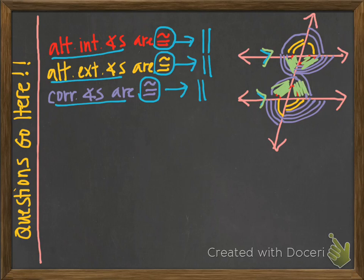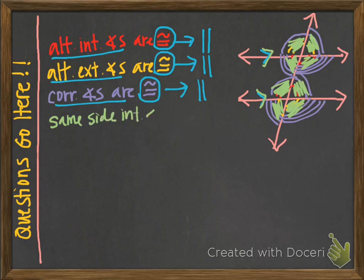The same is also true about same side exterior. If I can show that these two angles are supplementary — they add up to 180 — then those two lines are parallel. Or if I can show that these two same side exterior angles are supplementary, then our lines are parallel. So, same side interior or exterior angles, if they are supplementary, then our lines are also parallel.